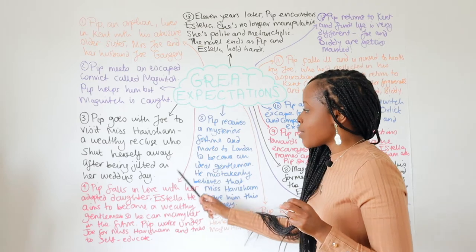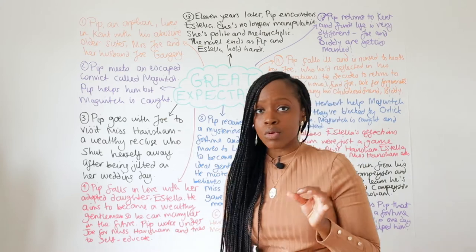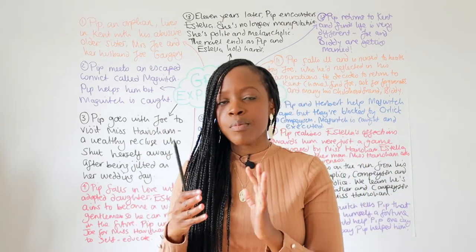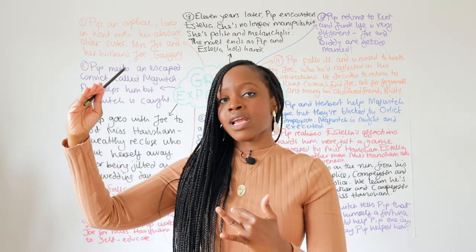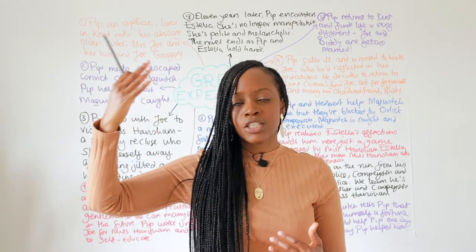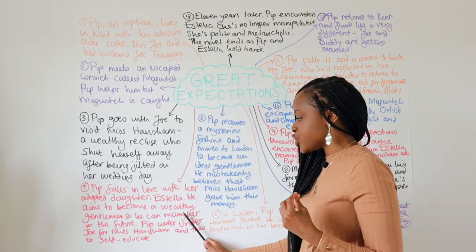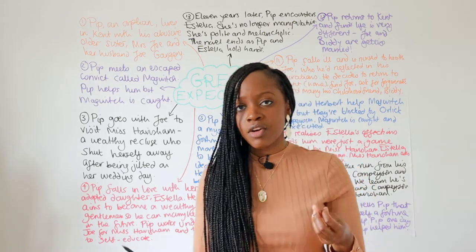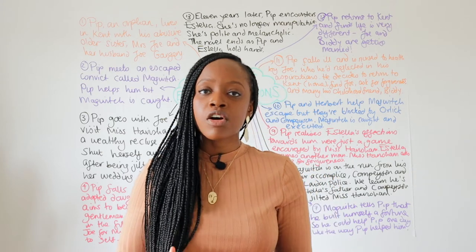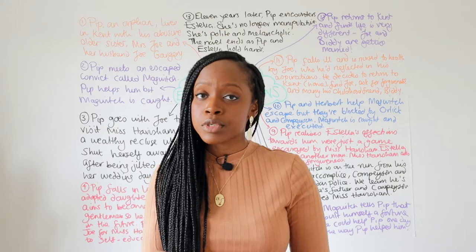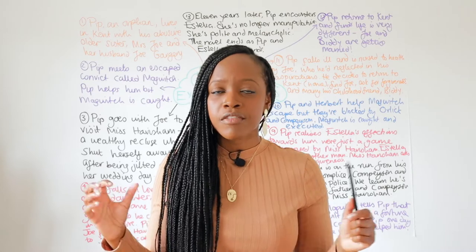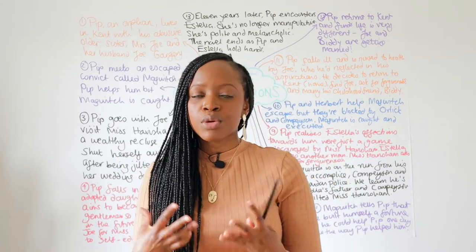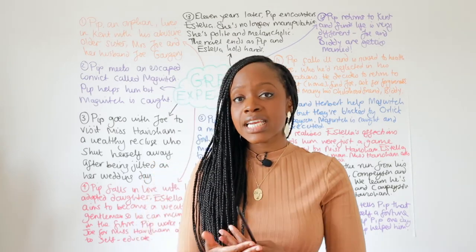We learn that Pip is working for Miss Havisham, and he meets and falls in love with her adopted daughter called Estella. Pip falls so in love with Estella's beauty — he's so entranced by her. Miss Havisham and Estella are in a completely different class to Pip: Pip is working class, whilst Estella is upper class. Therefore, Pip vows to become a wealthy gentleman so that he can one day marry Estella. He works under Joe for Miss Havisham during this period, and he tries to self-educate because he does not have access to formal education. During the Victorian era, lots of people who were working class could not afford to go to school. So he decides to self-educate whilst working for Miss Havisham so that one day, hopefully, he can be worthy enough for Estella's affections and to marry her.